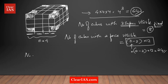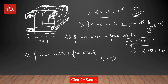For cubes with 1 face visible, you can use another equation: (n − 2)² × 6. You just need to substitute the value of n to find the number of cubes with only 1 face visible.